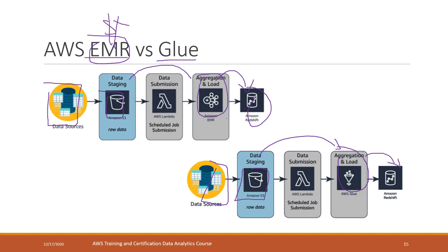Or you can use Glue to do the job. Lambda is another AWS service that can help you trigger those jobs automatically — it's a super cool feature — but we didn't cover it in this class. By using EMR you have more control, while by using Glue everything will be easier and more automatic.